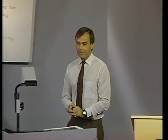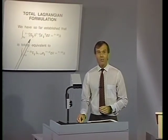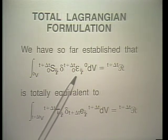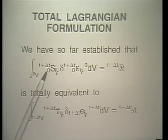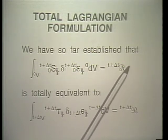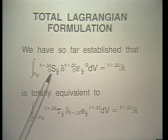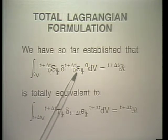The total Lagrangian formulation refers the stress and strain variables at time t plus delta t to the original configuration at time 0. 'Total' means reference to the original configuration. We have on the left-hand side the total internal virtual work, and on the right-hand side the total external virtual work, all at time t plus delta t. We have here the second Piola-Kirchhoff stress tensor and the Green-Lagrange strain tensor.